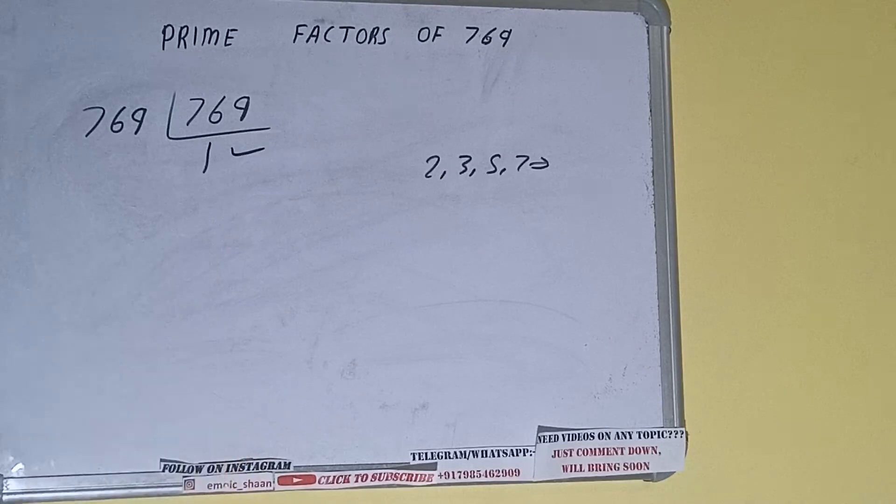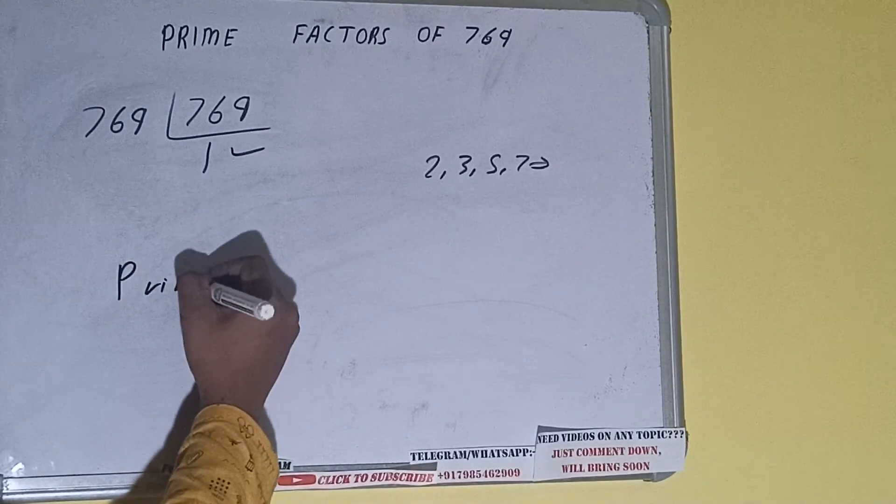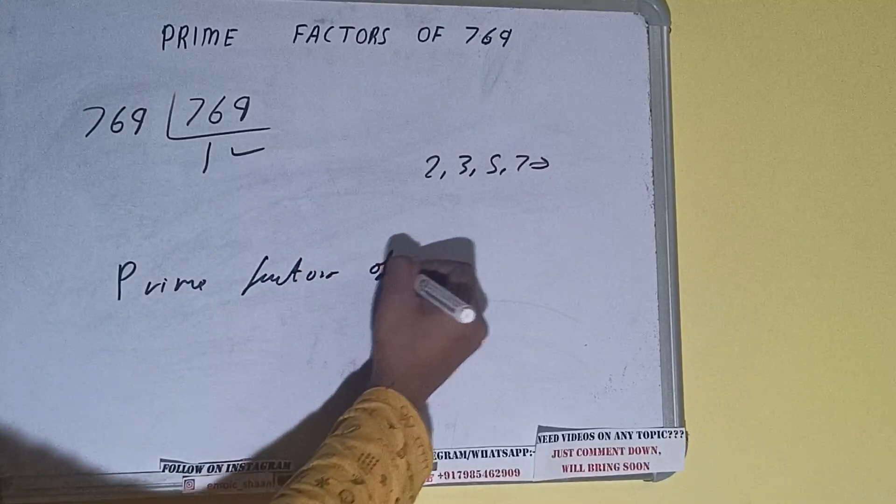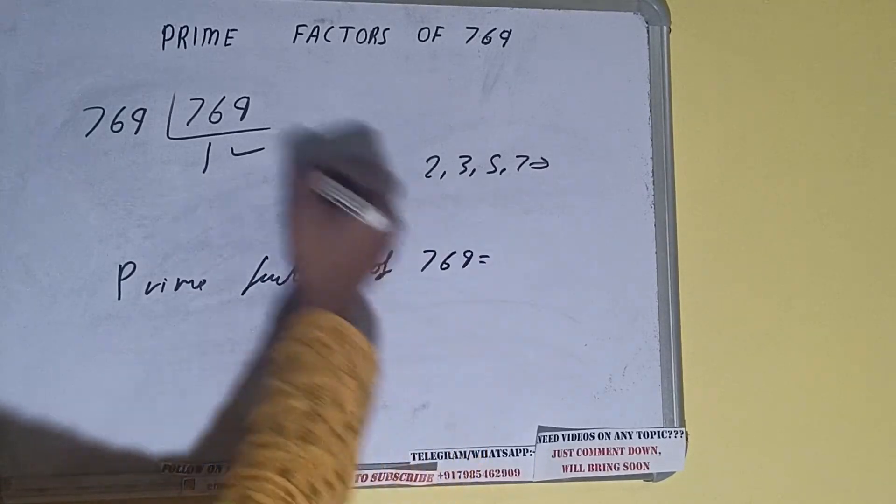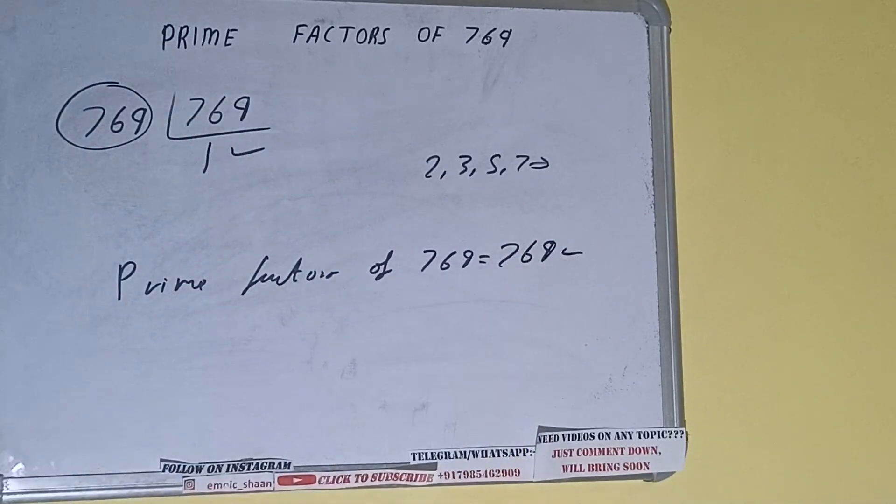Once we get 1, we need to stop and do one last thing. The prime factors of 769 equals to whatever is on the left-hand side, that is 769. That will be the answer.